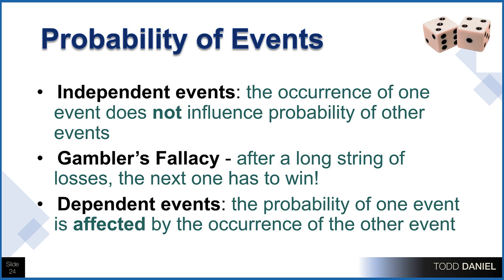Events are independent when the occurrence of one event does not influence the probability of other events, such as the flip of a coin, the roll of a die, or the spin of a roulette wheel. This leads us to the gambler's fallacy — the idea that after a long string of losses, the next one has to win. If a coin has flipped heads four or five times in a row, it is thought to be due to come up tails, when in fact every flip still has exactly the same 0.50 probability, assuming it is a fair coin. Similarly, if a roulette wheel has landed on red the last four times, that does not mean black is more likely to come up — the probability remains the same because those events are independent.